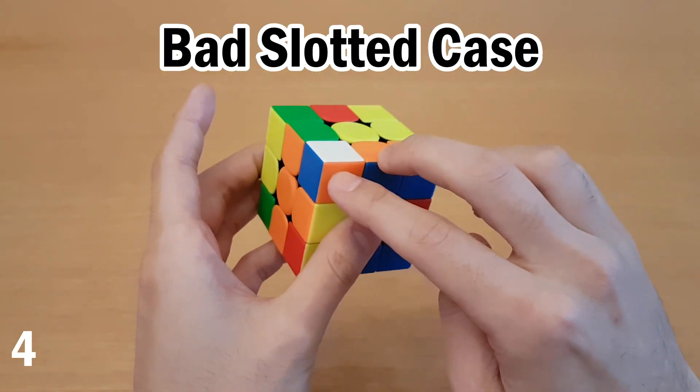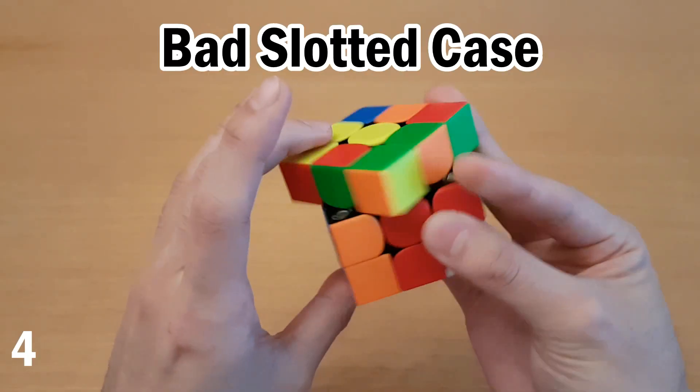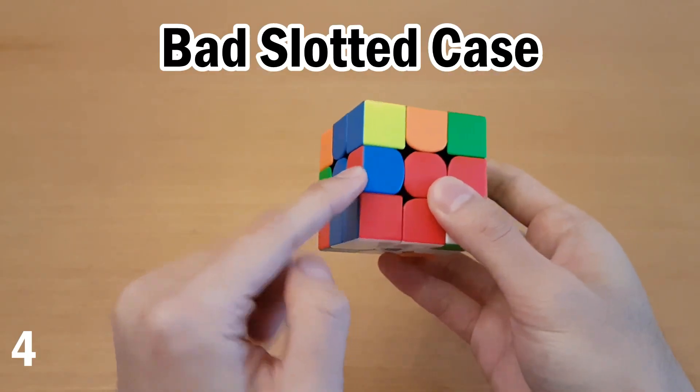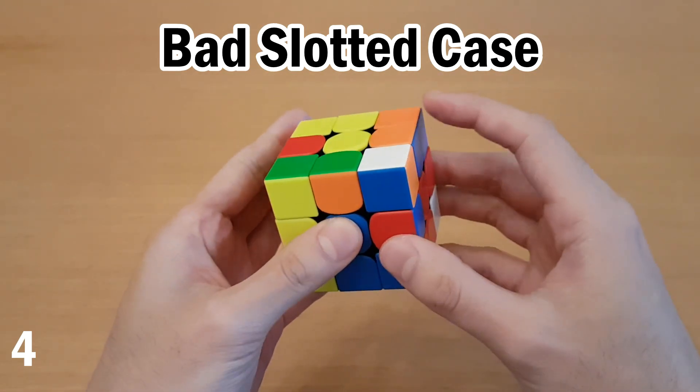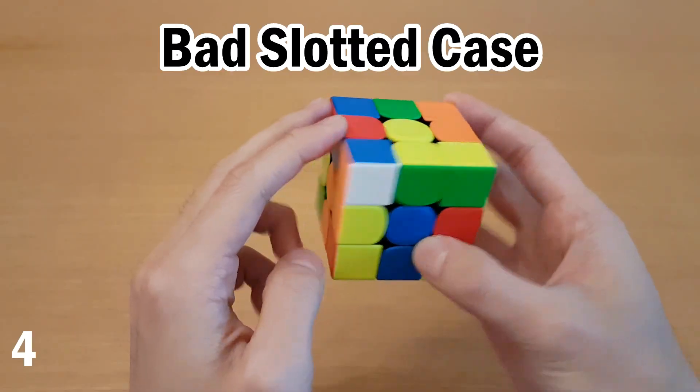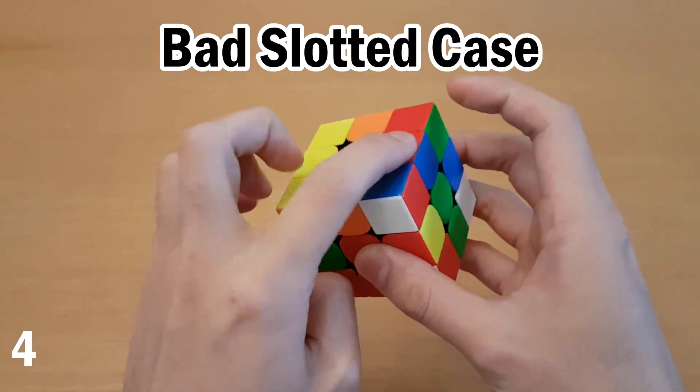So for example, if I'm doing this F2L pair, then I could rotate, and then set them up like this. But instead, that doesn't do anything to this, and I want this to be a better pair, so I can do this instead, and then set them up from here. And that takes this out. So then I can just insert this as usual, and then do this pair.